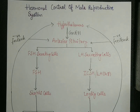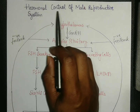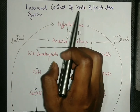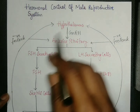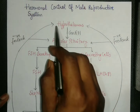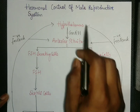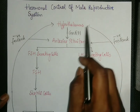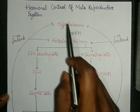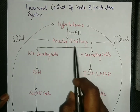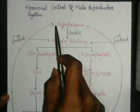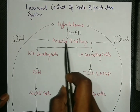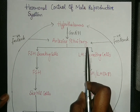In this lecture we will talk about hormonal control of the male reproductive system. This system starts from the hypothalamus, which is also known as the supreme commander of glands or master of master glands. The pituitary gland is known as the master gland, so the hypothalamus controls the pituitary gland.